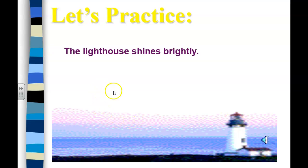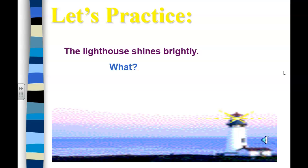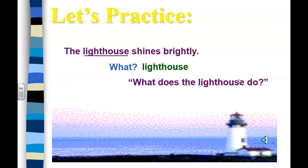'The lighthouse shines brightly.' What is the sentence about? The lighthouse. What does the lighthouse do? It shines. That's our action word, or verb. Shines is what it does — it's the verb.